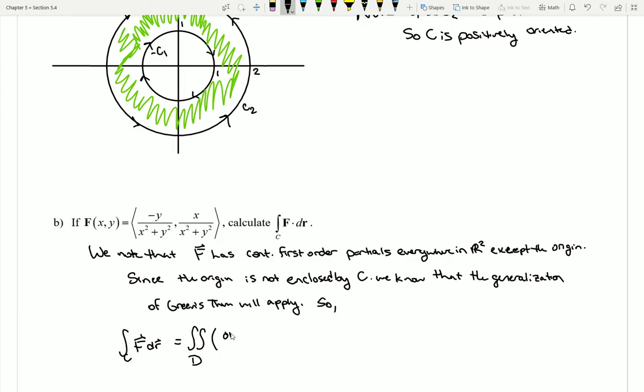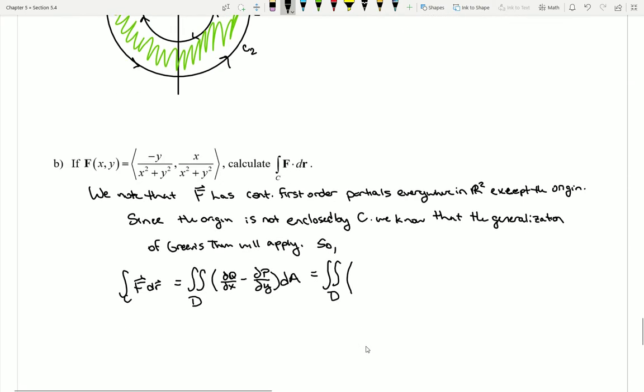I know I can immediately trade out for this double integral over D of my partial of q with respect to x minus my partial of p with respect to y. And if I wanted to go ahead and actually crunch this out, I'd have to take those partials. I'm gonna go ahead and do it here just to show fully how to run this through. So if I start taking a look at q, remember here that my q is going to be the piece that gets multiplied to my dx.